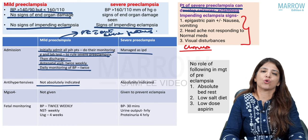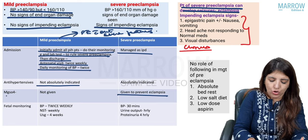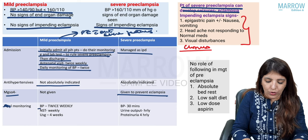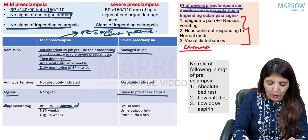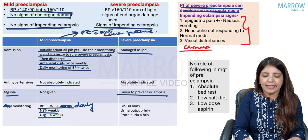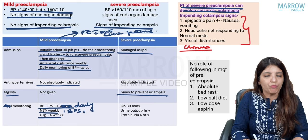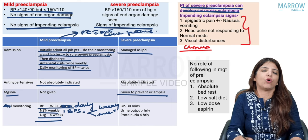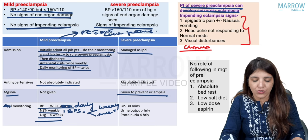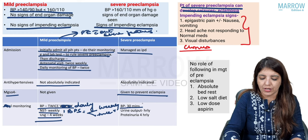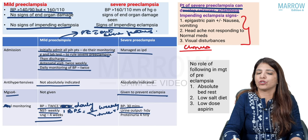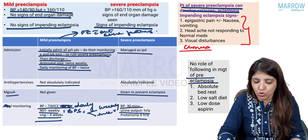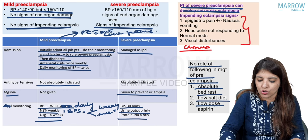In severe preeclampsia, there are chances of throwing convulsions, so magnesium sulfate must be given to all patients of severe preeclampsia to prevent eclampsia. For monitoring mild preeclampsia: BP twice daily, NST weekly, biophysical profile weekly or twice weekly, and ultrasound for growth every four weeks. For severe preeclampsia: BP every 30 minutes, urine output charting hourly, and proteinuria checked every four hours. In preeclampsia, there is no role for absolute bed rest, low salt diet, or low-dose aspirin.